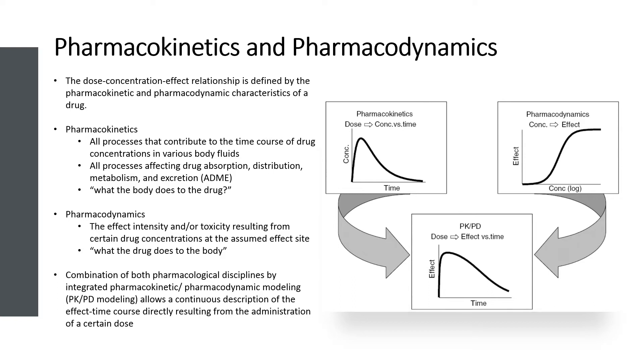In contrast, pharmacodynamics characterizes the effect intensity and toxicity resulting from certain drug concentrations at the assumed effect site. Simplified, pharmacokinetics characterizes what the body does to the drug, whereas pharmacodynamics assesses what the drug does to the body.